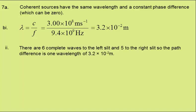Well, there are six complete wavelengths from the left slit and five from the right slit, so the path difference is one wavelength.